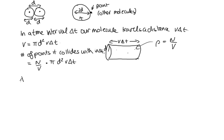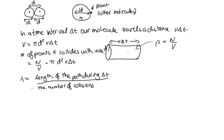And now lambda is just equal to the length of the path during delta t, so this length here, divided by the number of collisions, because remember lambda is the average distance it travels between collisions.